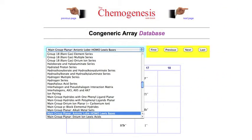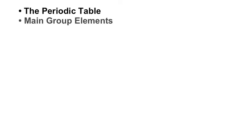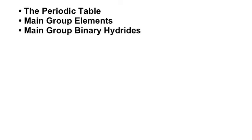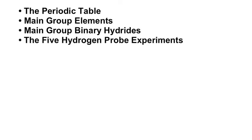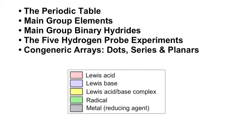In the Chemogenesis webbook there is a database of congeneric arrays. So we have gone from the periodic table, to the main group elements, to the main group binary hydrides. We have taken five hydrogen probe experiments and found congeneric arrays: congeneric dots, congeneric series, and congeneric planars of Lewis acids, Lewis bases, and some Lewis acid-base complexes.